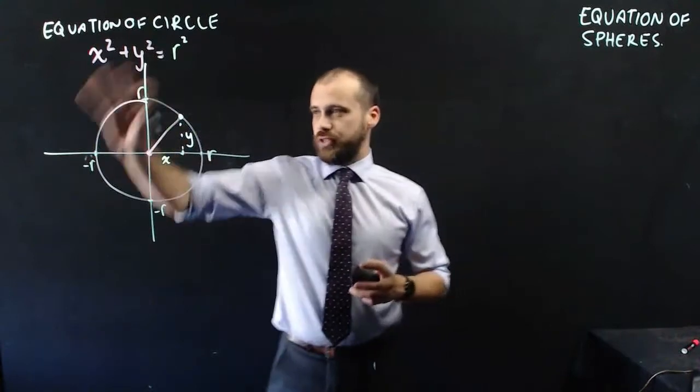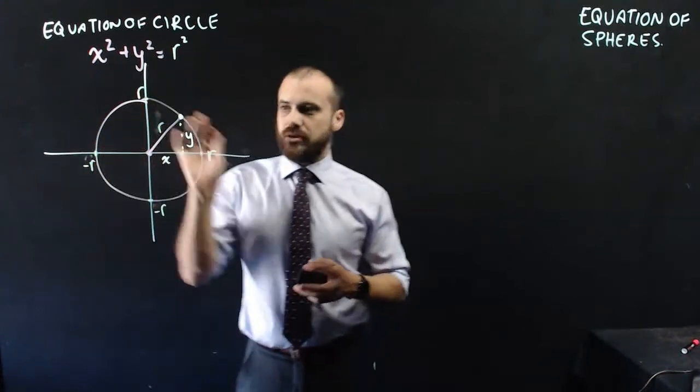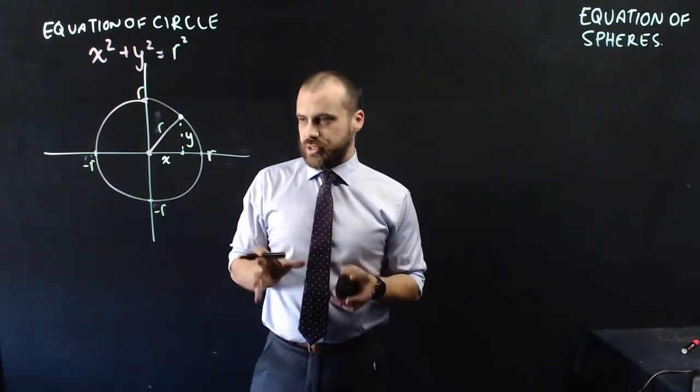We've really got to understand the equation of circles first. This is the equation of a circle, x squared plus y squared equals r squared, where r is the radius. This is really just an application of Pythagoras' theorem.